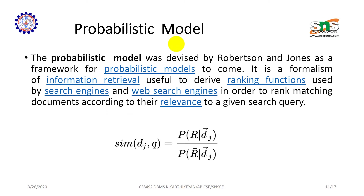The probabilistic model was devised by Robertson and Jones as a framework. It is a formalism of information retrieval useful to derive the ranking function used by search engines and web search engines in order to rank matching documents according to their relevance to a given search query. For example, given a query, documents that match are returned as results; those that do not match yield no result. That is the probabilistic model. The similarity is expressed as sim(d_j, q) = P(R|d_j) / P(R-bar|d_j).